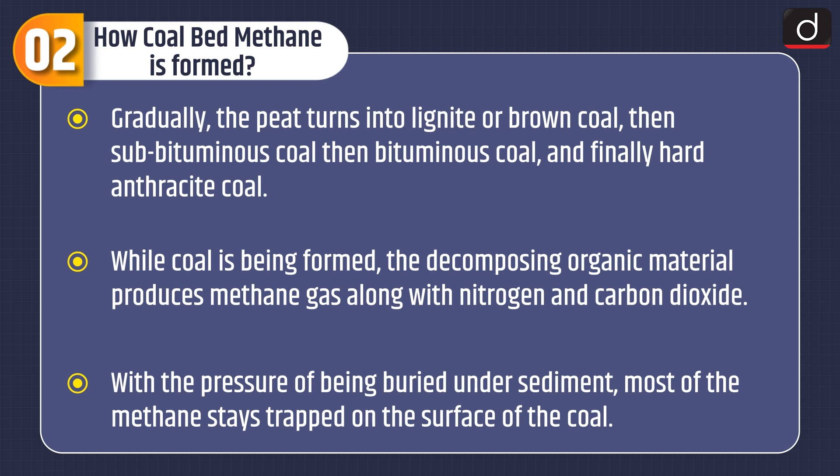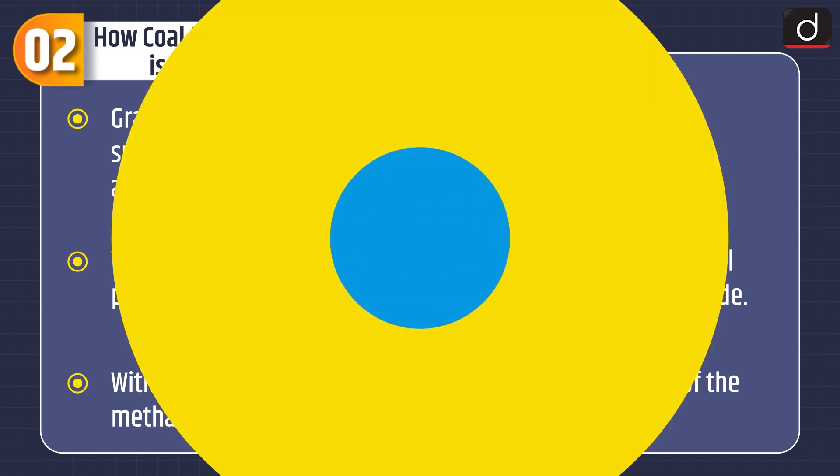While coal is being formed, the decomposing organic material produces methane gas along with nitrogen and carbon dioxide. With the pressure of being buried under sediment, most of the methane stays trapped on the surface of the coal.